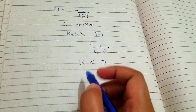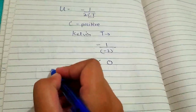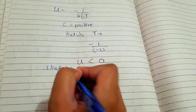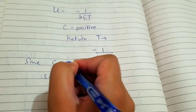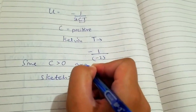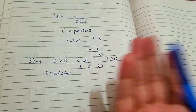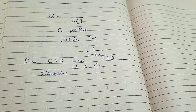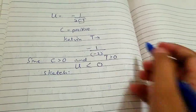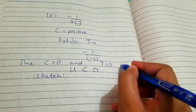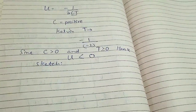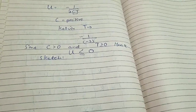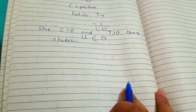For the sketch: since C is greater than 0 and T is greater than or equal to 0 — note that 0 Kelvin is a permissible temperature — hence U is always less than or equal to 0. We will now sketch this.